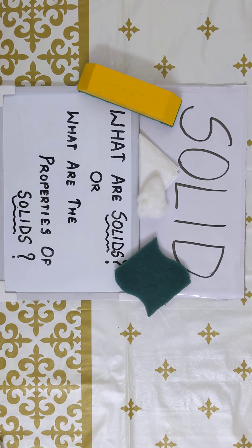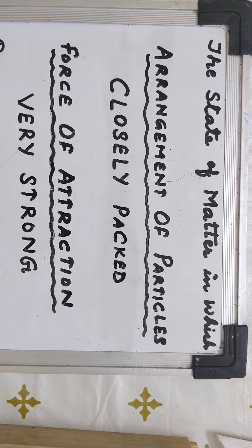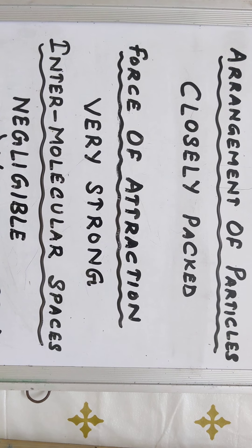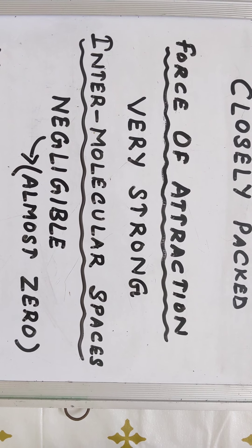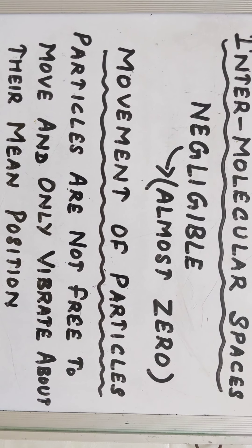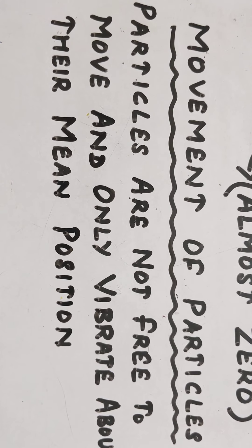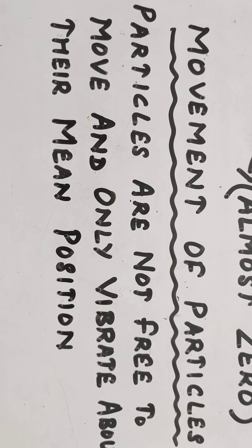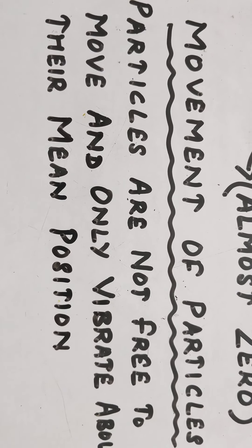Let us start with what are solids and what are the properties of solids. Solids are the state of matter in which the particles are very closely packed, the particles have a very strong inter-particle force of attraction, the intermolecular spaces between the particles is negligible — that means almost zero. The particles are not free to move and only vibrate about their mean position, which means right at their original position. For example, if you are sitting somewhere and not allowed to move, you can only move your head or your waist — that is the kind of position meant by mean position.